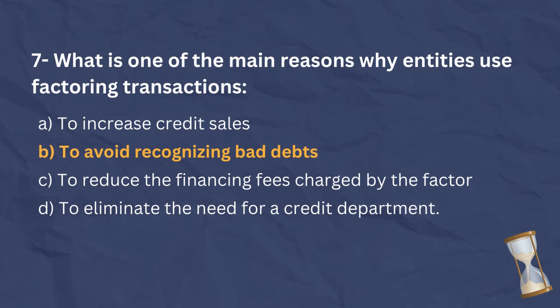B is the correct answer. One of the main reasons entities use factoring transactions is to mitigate bad debt risk. By transferring receivables to a factor, the entity shifts responsibility for collection to the factor. This reduces the likelihood of incurring losses due to non-payment by customers and allows the entity to minimize or avoid the recognition of bad debts on its financial statements.